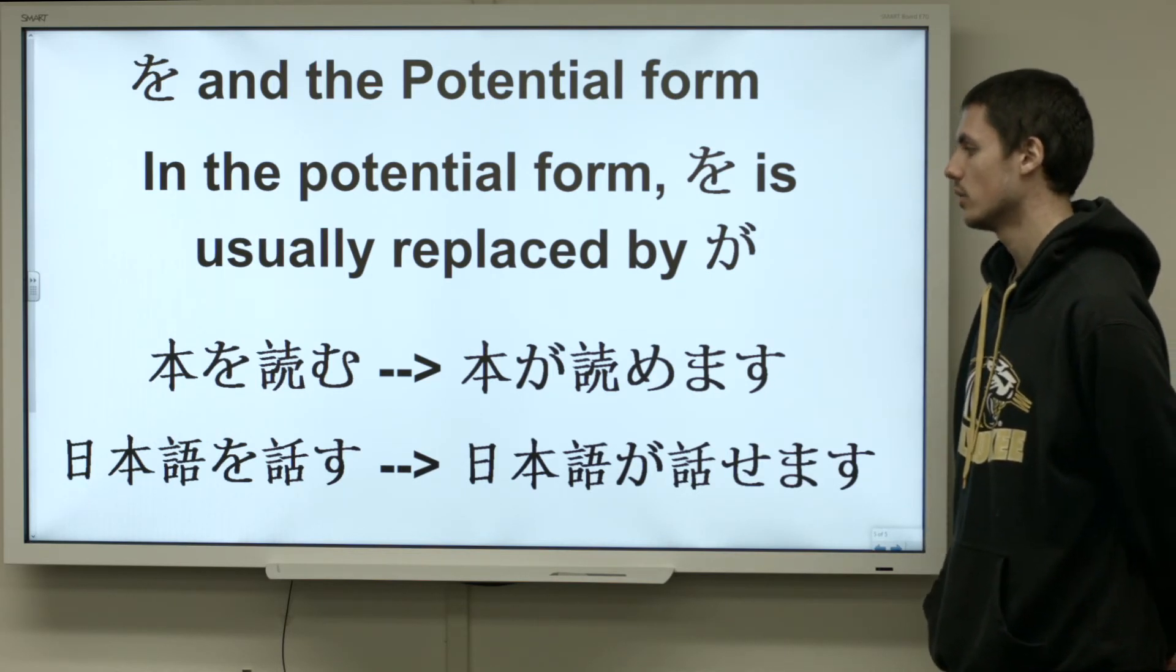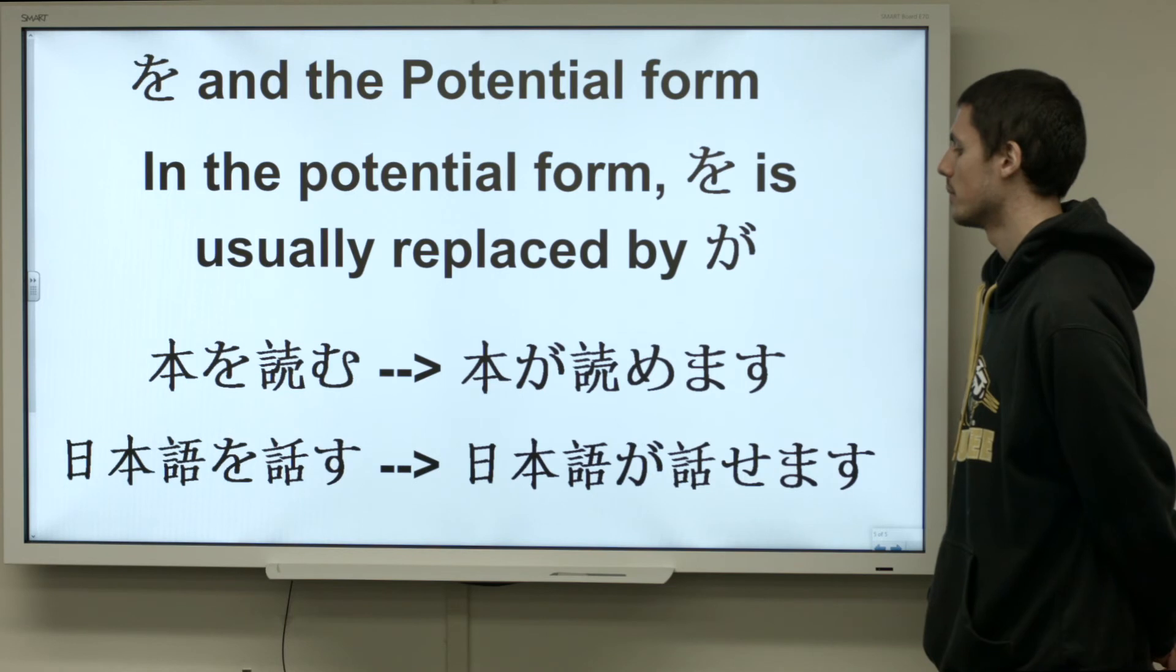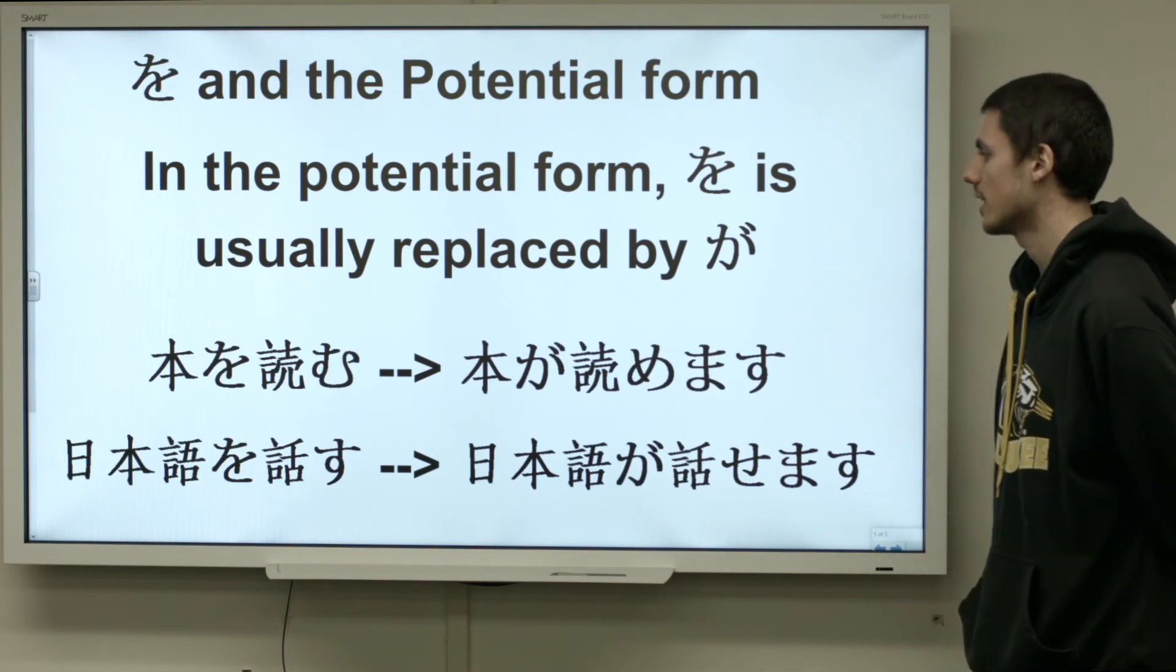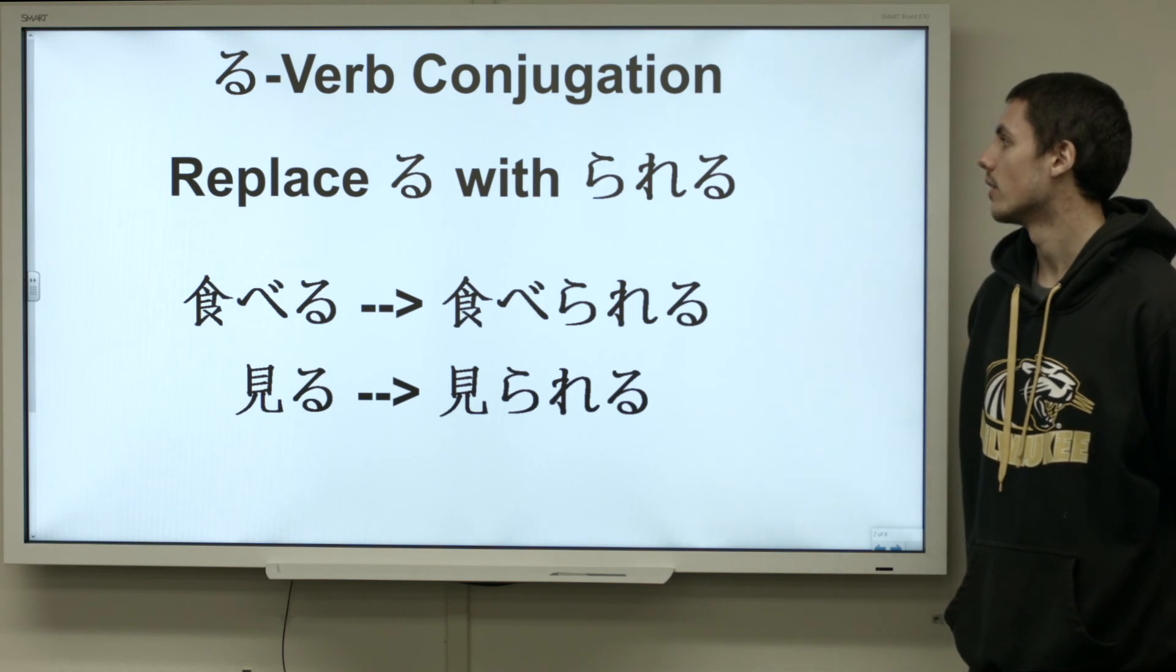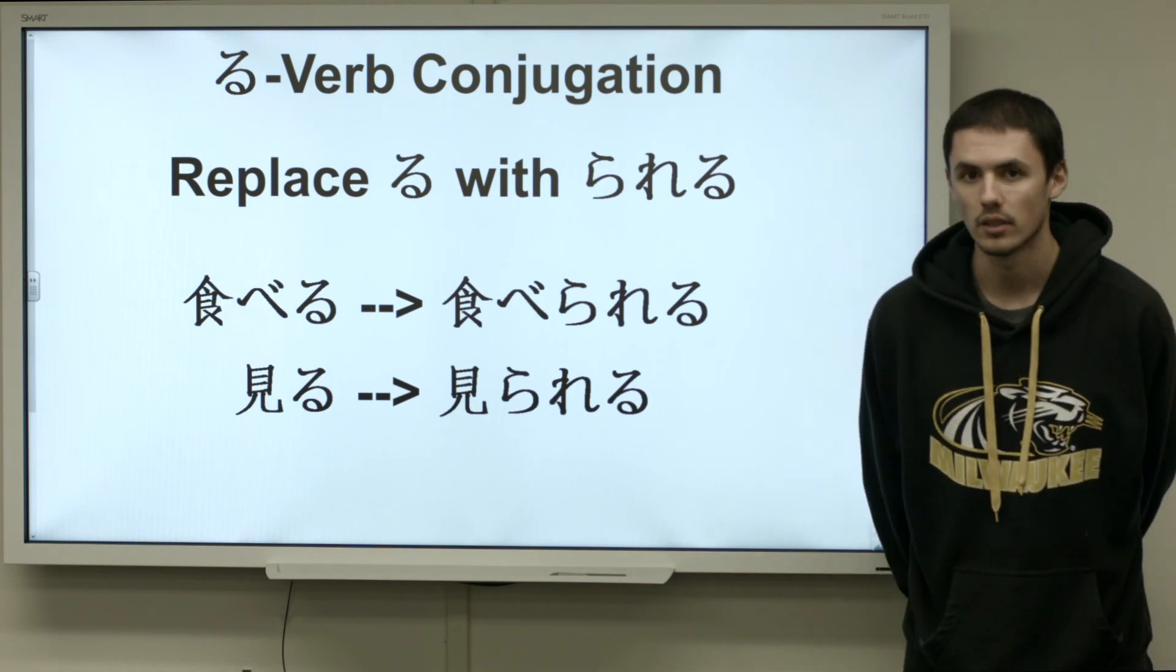So, nihongo wo hanasu, to speak Japanese, becomes nihongo ga hanaseru, or hanasemasu. And that is all for today. Arigatou gozaimasu.